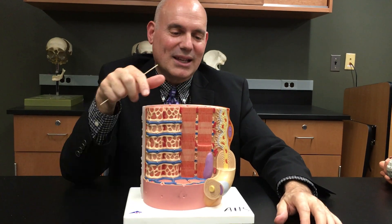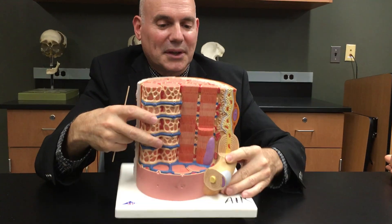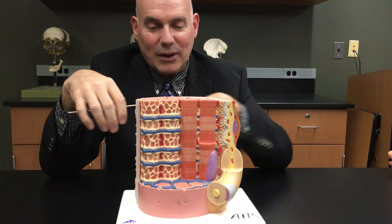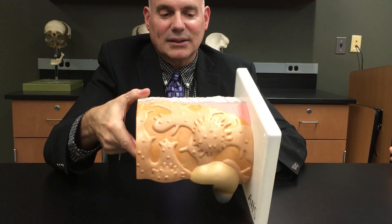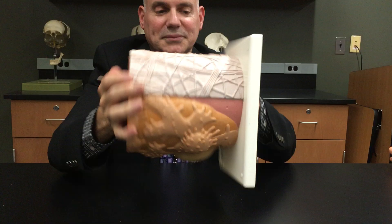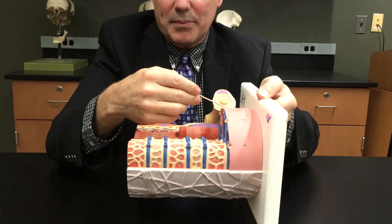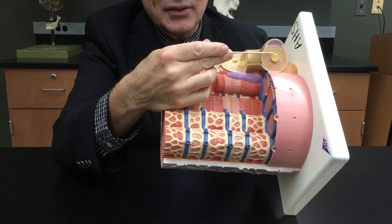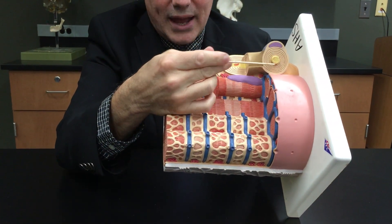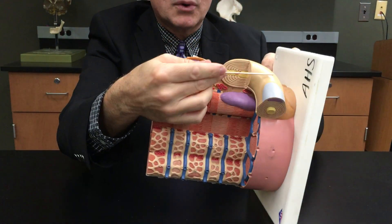In a skeletal muscle fiber cross-sectional view, we look at the components outside and inside. Outside, the pink sarcolemma is the cell membrane. You can see the axon of the motor neuron surrounded by the Schwann cell.